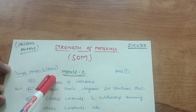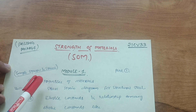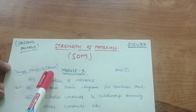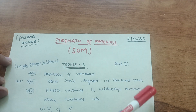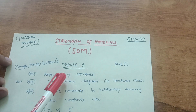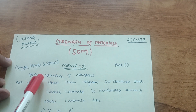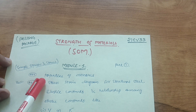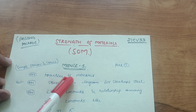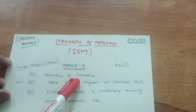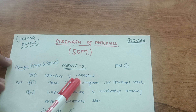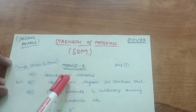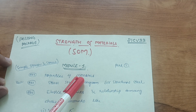In Module 1 there are two chapters: the first one is Simple Stresses and Strains, and the next part is Compound Stresses. You have to focus on the first chapter — Simple Stresses and Strains — and leave the second part. In the first part, cover properties of materials such as elasticity, toughness, strength, and related terms — you should know at least the definitions.